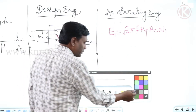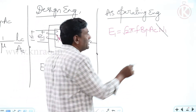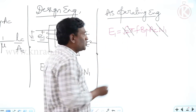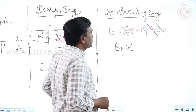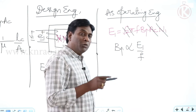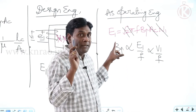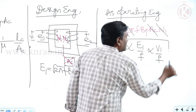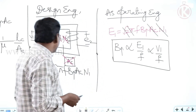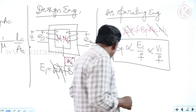Since N1, Ac, √2, and π are all constants for the operating engineer, B_max becomes directly proportional to E1/f. And since in an ideal transformer |V1| = |E1|, we get B_max ∝ V1/f. Always keep in mind that this simplified proportionality applies only for the operating engineer, not for the design engineer.